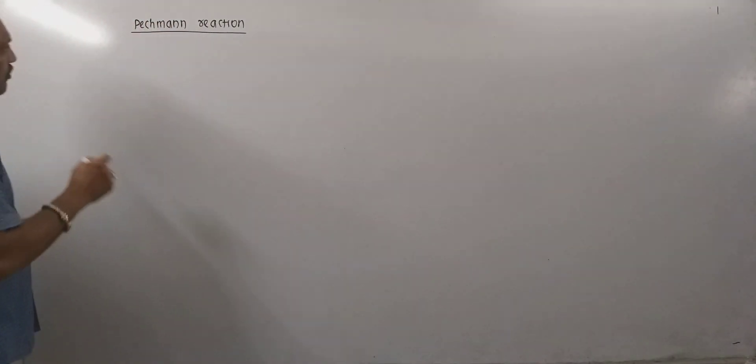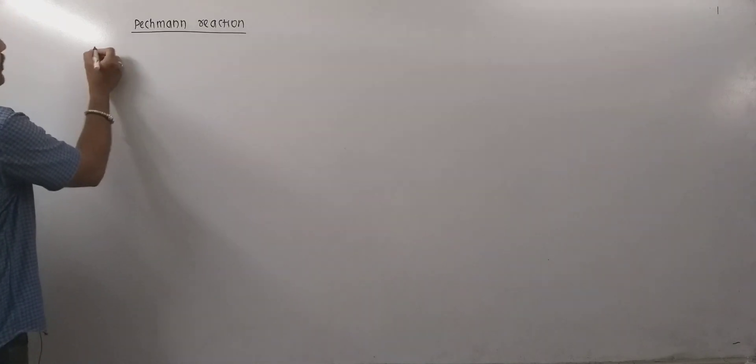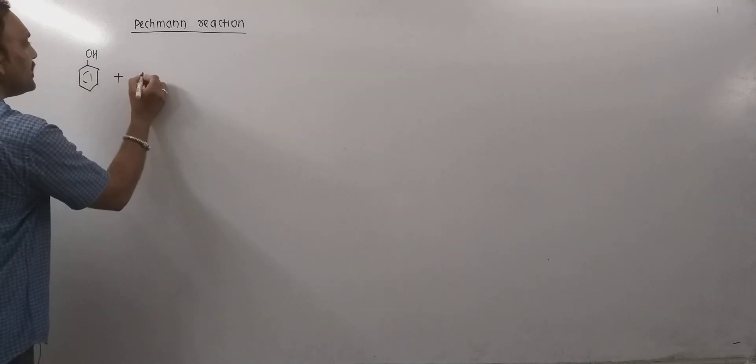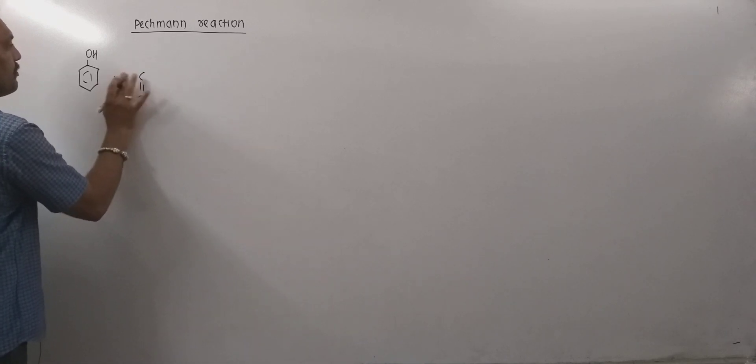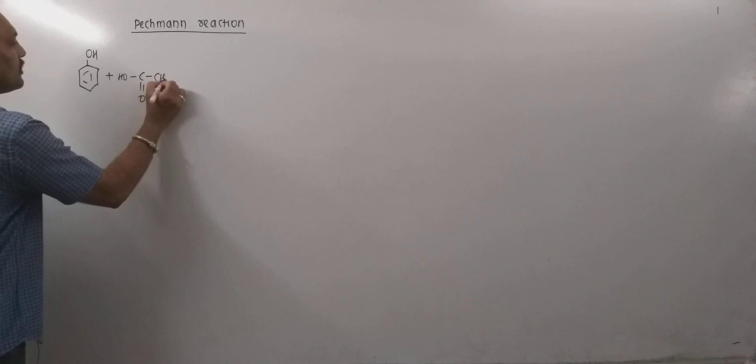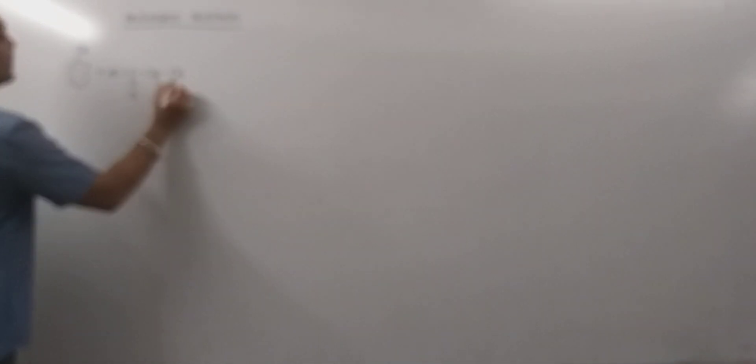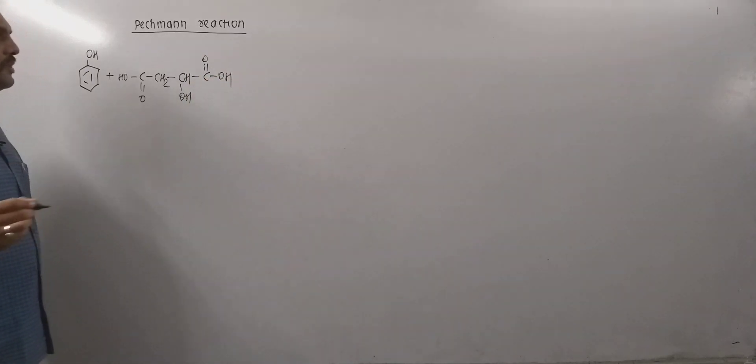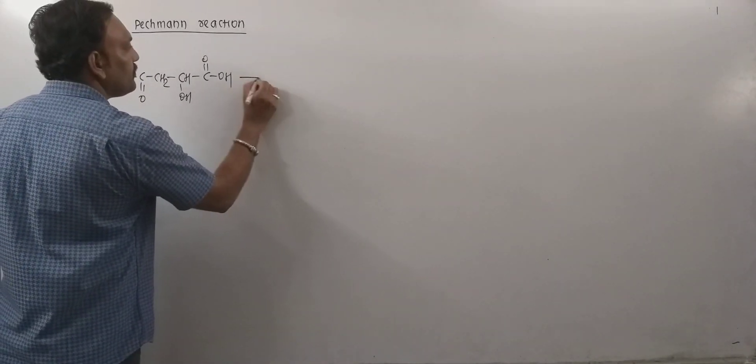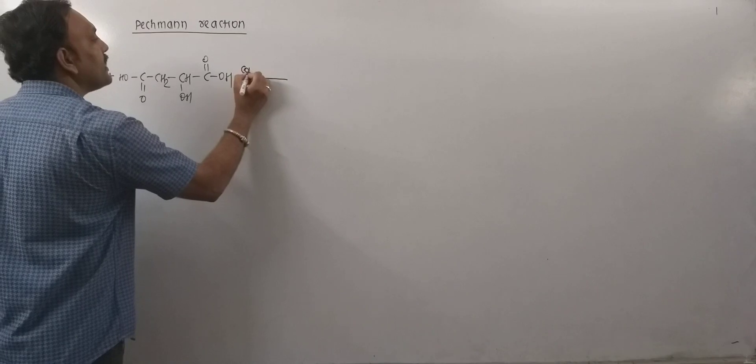Take an example. Monohydric phenol, that is carbolic acid, when this carbolic acid is heated with malic acid - malic acid can be given as COOH CH2 CHOH COOH, this is the malic acid which happens to be a dicarboxylic acid.